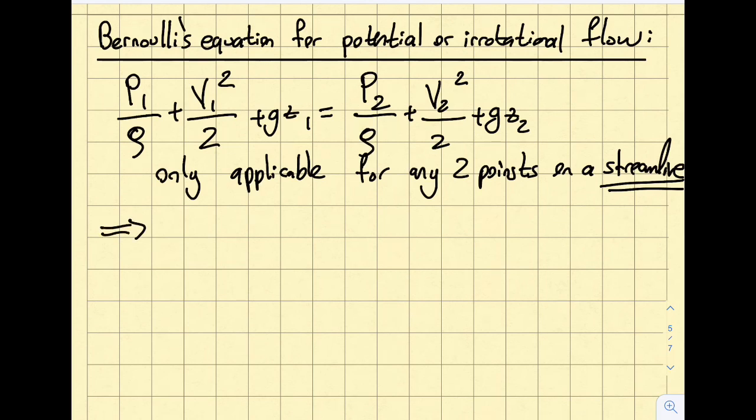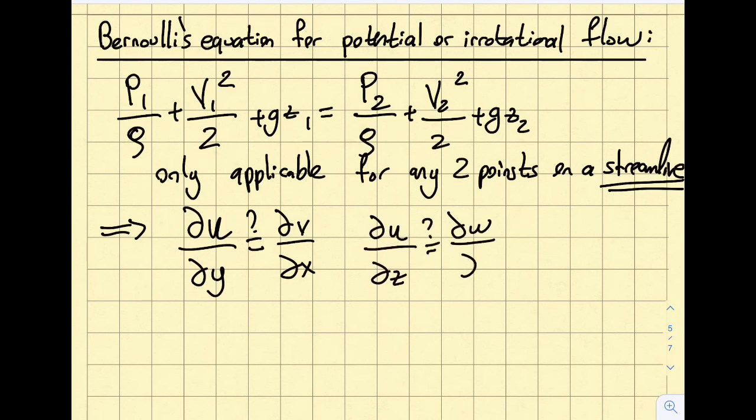Potential flow or irrotational flow is obtained when del u del y equals del v del x, also del u del z equals del w del x, and also del v del z equals del w del y.